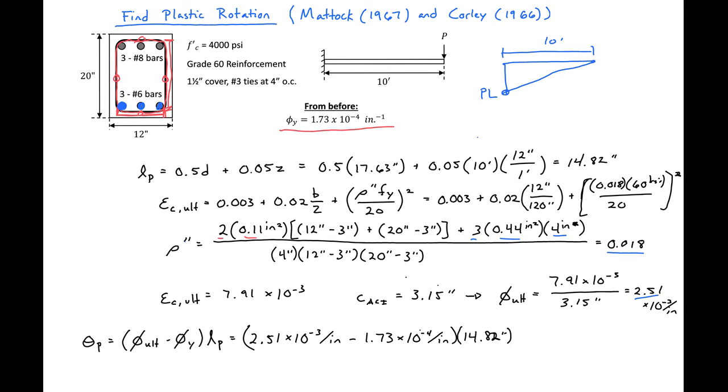So then we can find that our rotation, our plastic rotation, will be 0.035 radians. And this is our final answer.